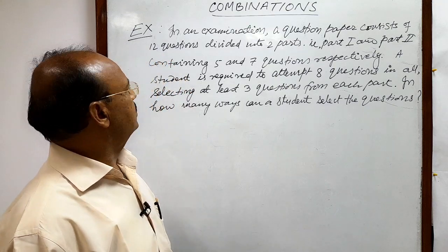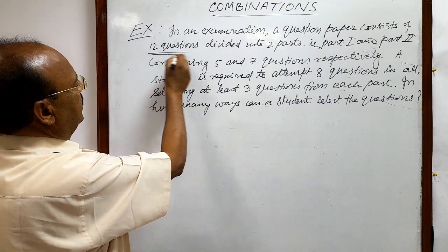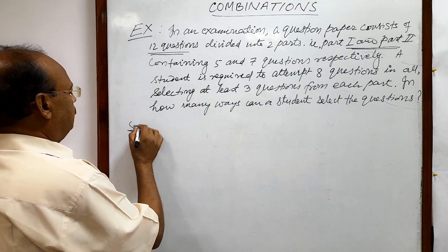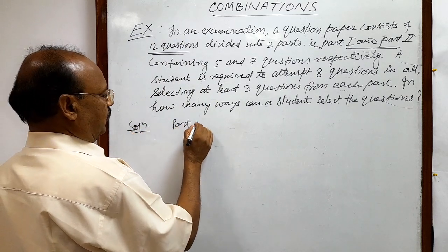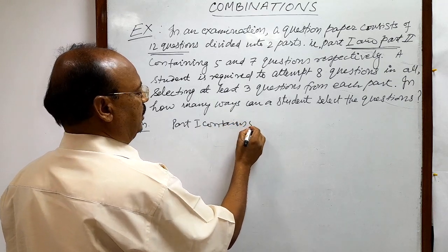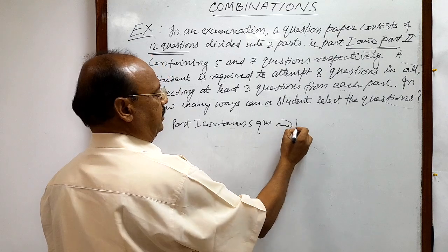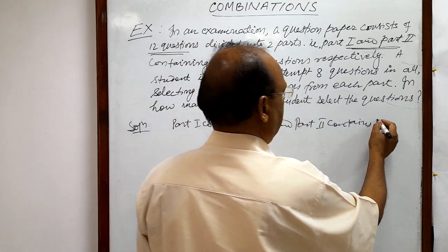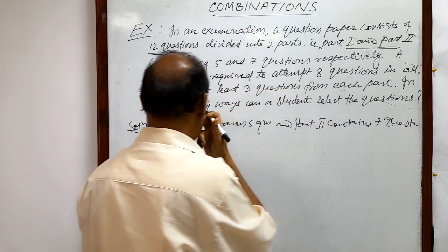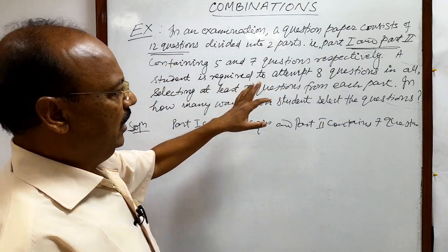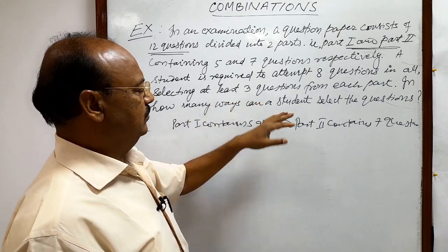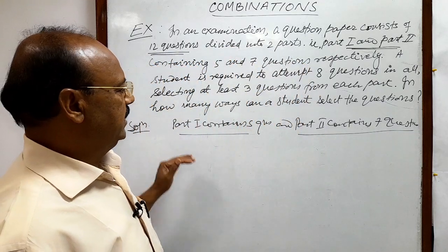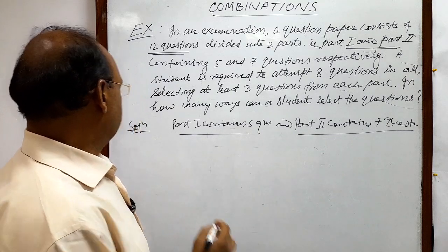So these 12 questions have been divided into two parts: Part 1 and Part 2. Part 1 contains 5 questions and Part 2 contains 7 questions. A student has to select a total of 8 questions with a minimum of 3 questions from each group. So what are the different options of selecting questions from each group? The total number of questions selected will be 8.